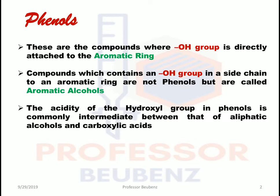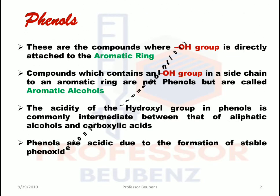The acidity of phenols — that is, the acidity of hydroxyl groups on phenols — is commonly intermediate between that of aliphatic alcohols and carboxylic acids. It means the acidity of phenols is more than that of alcohols but less than that of carboxylic acids. I have already uploaded a video on the topic of acidity of carboxylic acids.